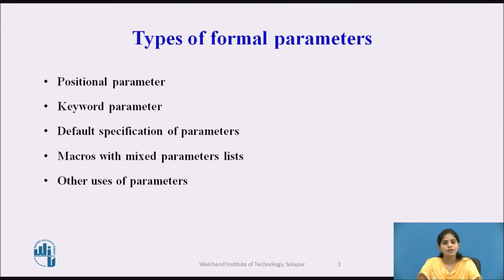There are different types of formal parameters in macros. The first one is the positional parameter, the second is the keyword parameter, the third is the default specification of parameters, the fourth is macros with mixed parameter list, and the fifth one is the other uses of parameters.